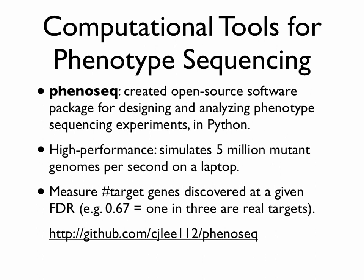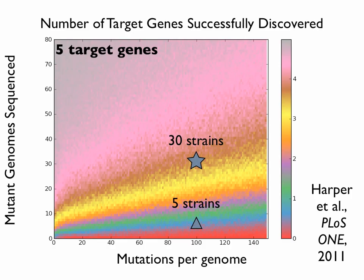We started with quite a bit of simulation of this problem, giving us a computational experiment planning platform. The main advantage is that we can do lots of parameter variation because we can simulate essentially 5 million individual phenotype sequencing mutant genomes on a laptop. Typically, we're analyzing at a specified false discovery rate — say, one out of three of your top hits has to be a true target gene — how many target genes would you discover under some combination of assumptions? This is all open source and available for anyone to use.